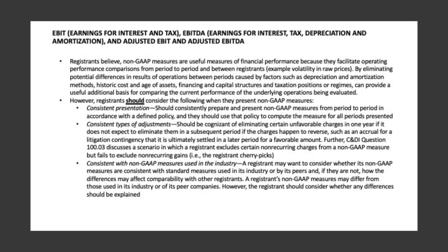Consistent presentation: Registrants should consistently prepare and present non-GAAP measures from period to period in accordance with a defined policy, and use that policy to compute the measure for all periods presented. Consistent types of adjustments: Registrants should be cognizant of eliminating certain unfavorable charges in one year if they do not expect to eliminate them in a subsequent period — for example, if the charges happen to reverse, such as an accrual for a litigation contingency that is ultimately settled in a later period for a favorable amount. C&DI Question 100.03 discusses a scenario in which a registrant excludes certain non-recurring charges from a non-GAAP measure but fails to exclude non-recurring gains — i.e., the registrant cherry-picks.